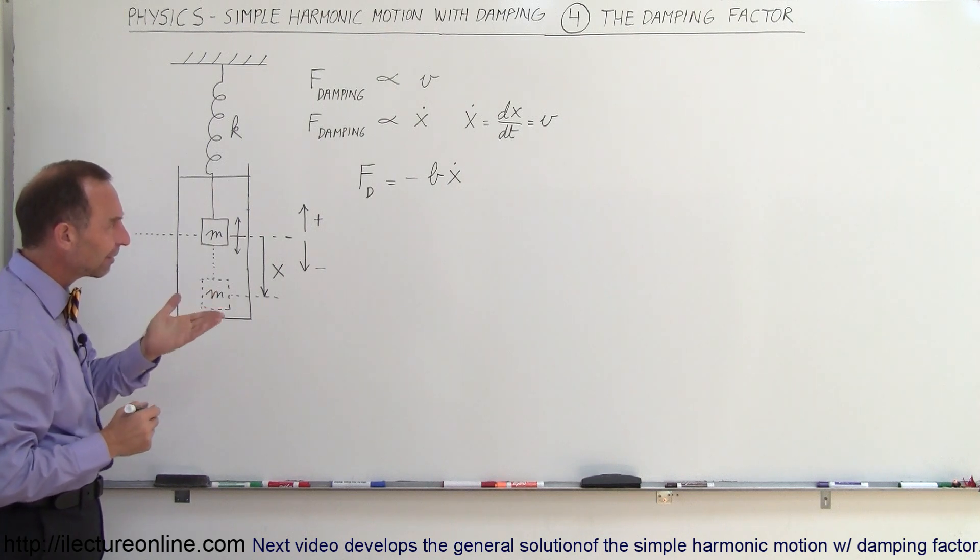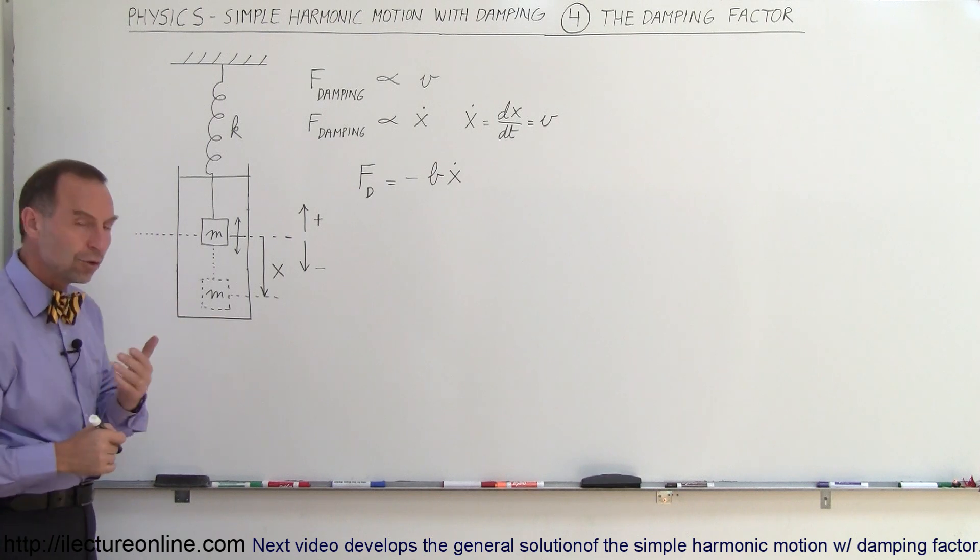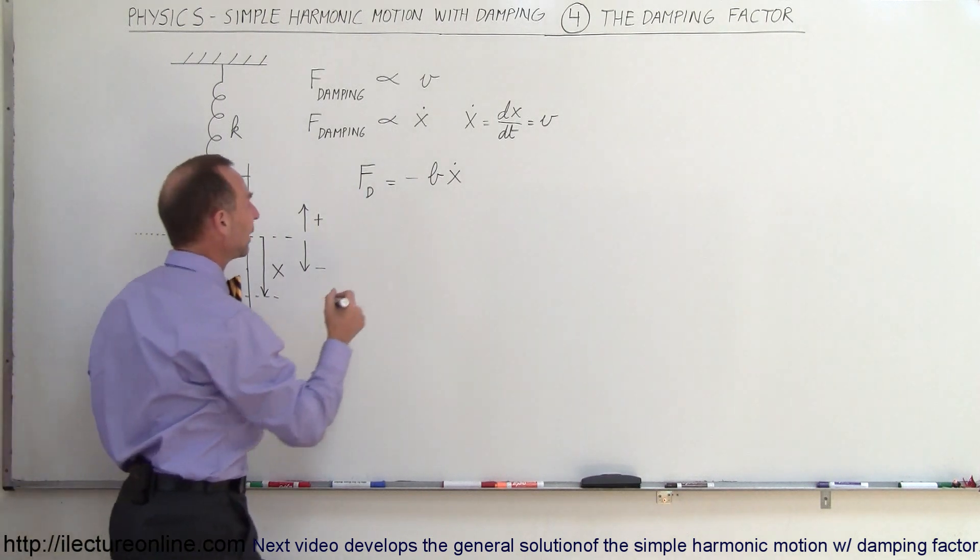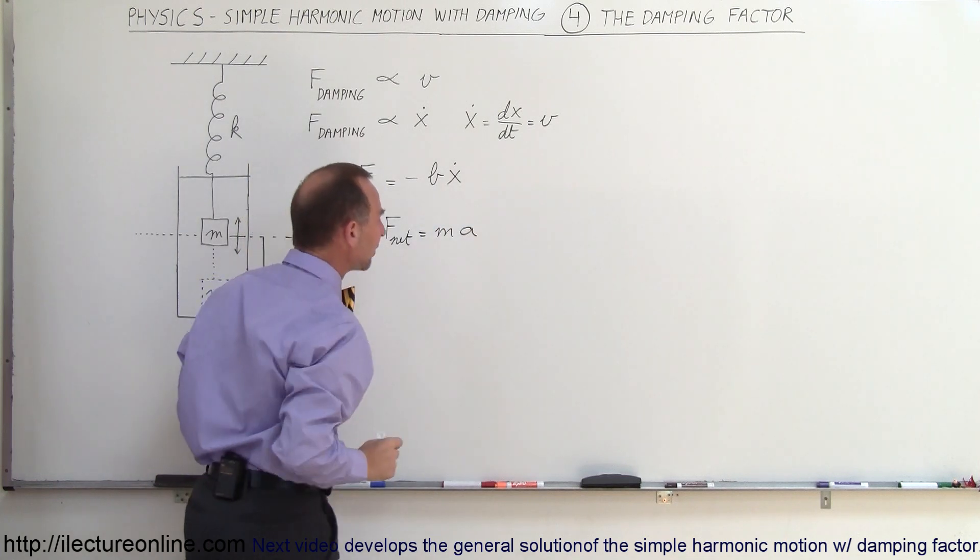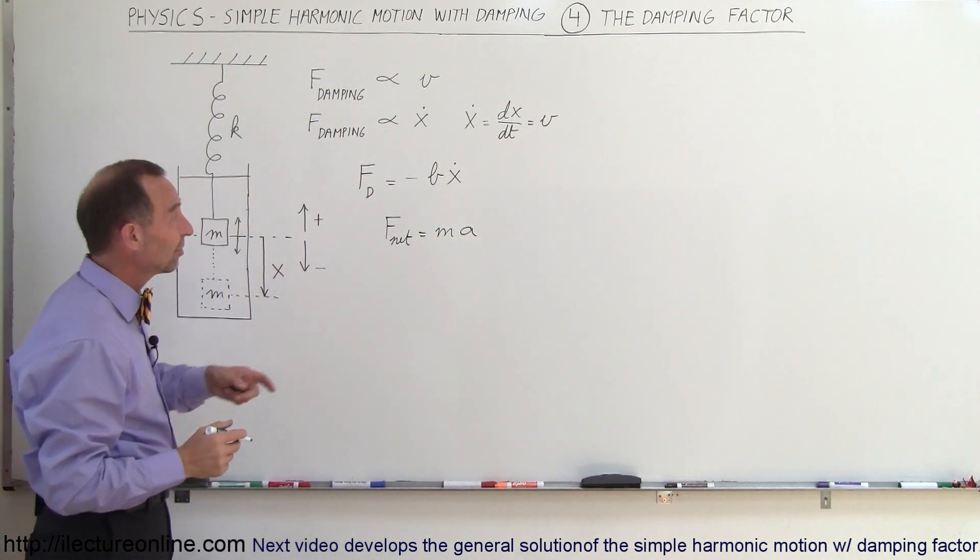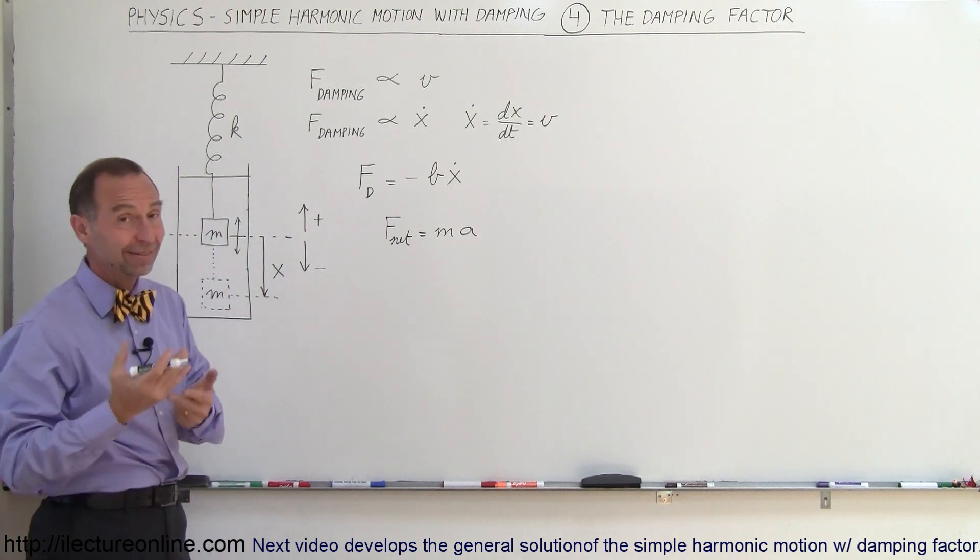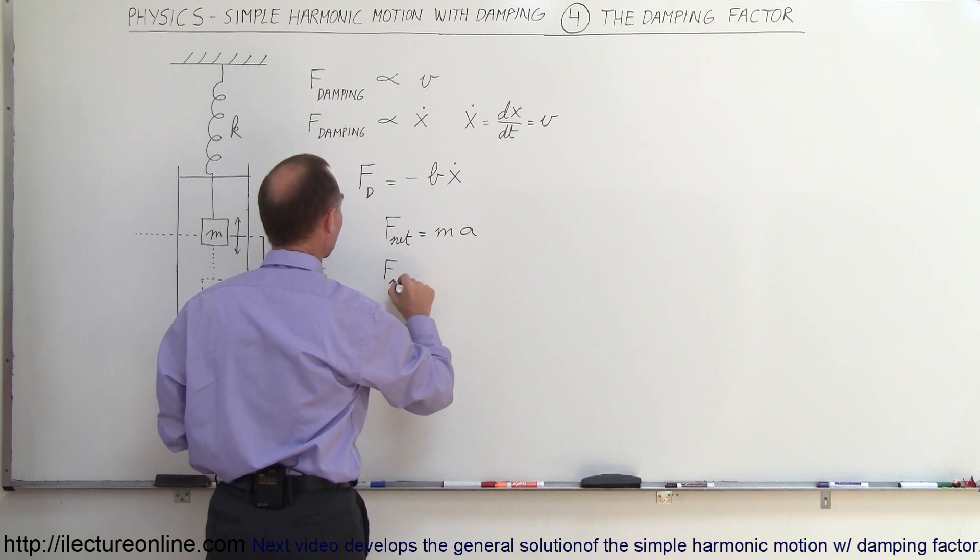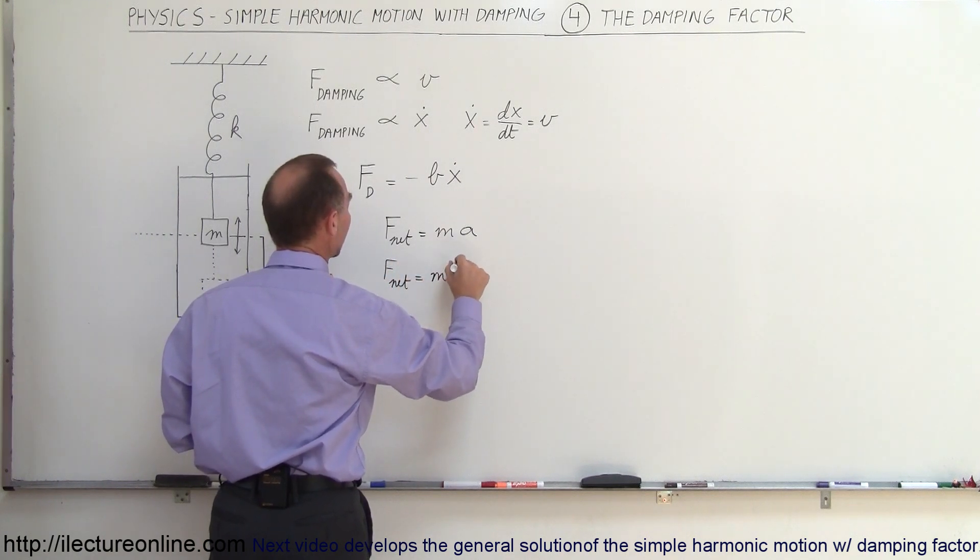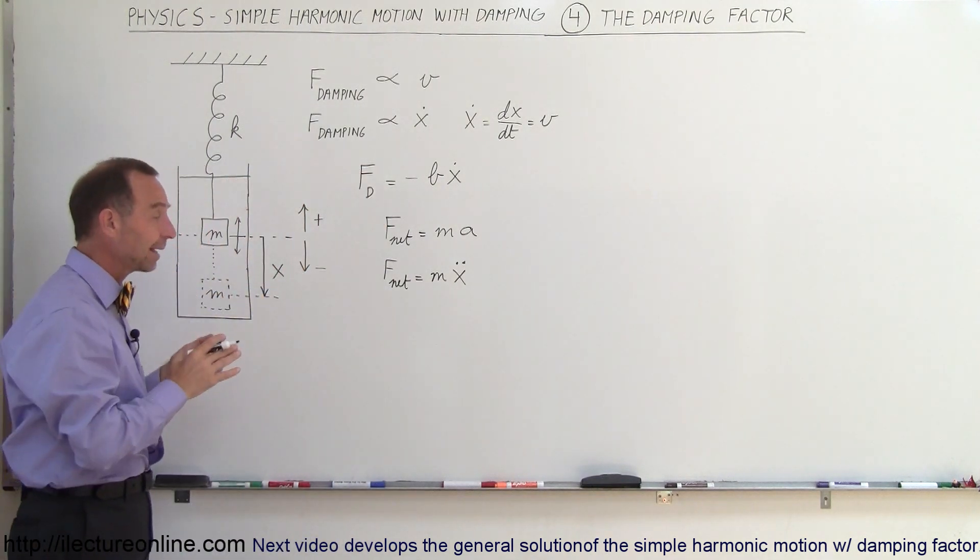So now, how does that fit into the overall equation? Remember that when we use Newton's second law, we can write that F net is equal to the mass times acceleration of the object. In this case, instead of writing acceleration, we're going to write x double dot. x double dot simply means the second derivative of the position with respect to time. So we can write that F net is equal to the mass times x double dot.